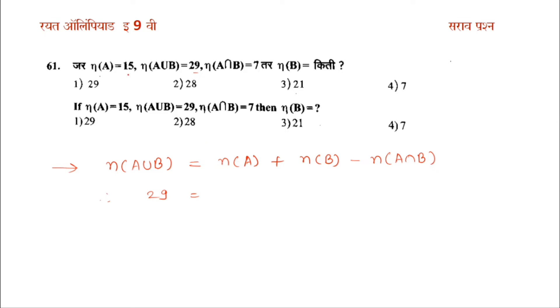N of A means A is 16. N of B, N of A intersection B is 6.